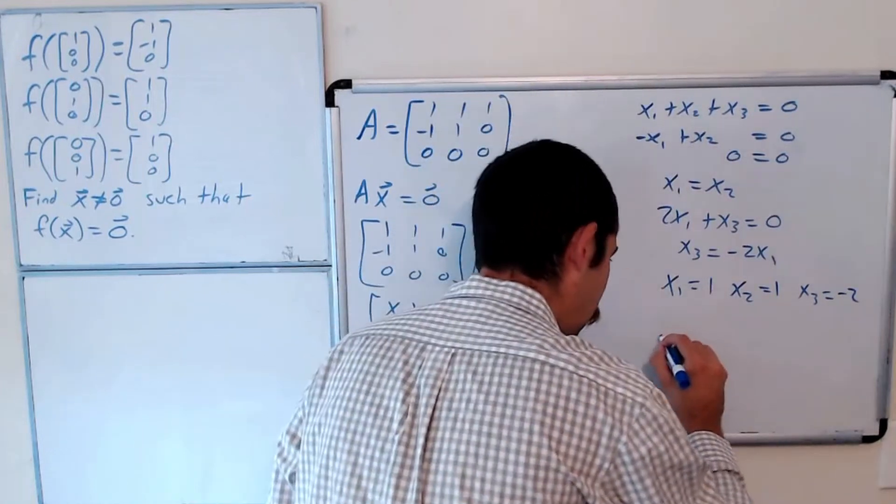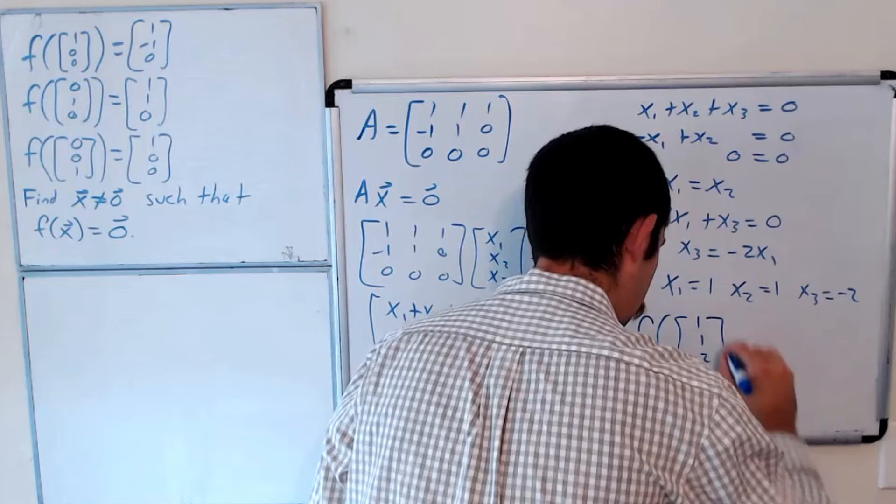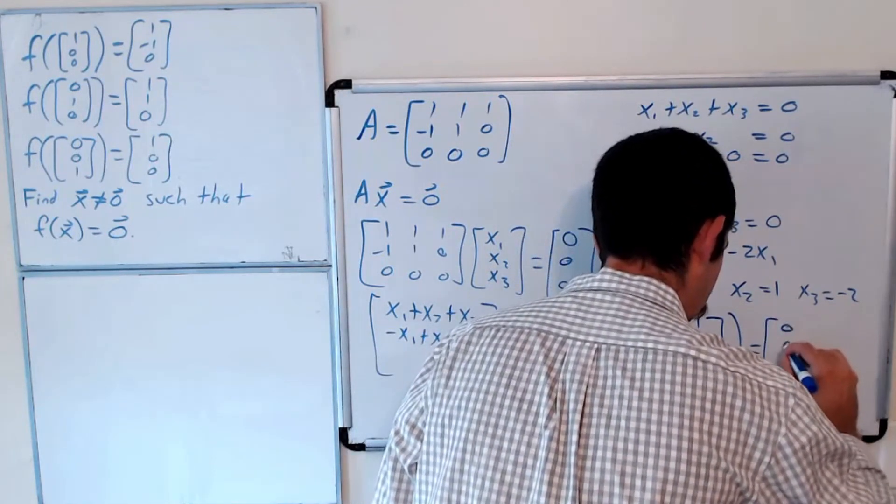So to answer our question, f of the vector (1,1,-2), if we did it all correctly, should give us the 0 vector.